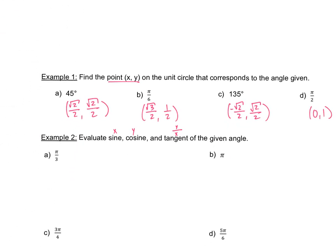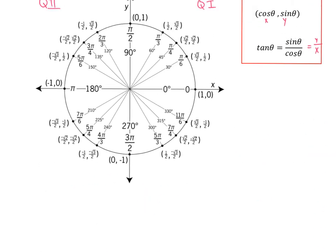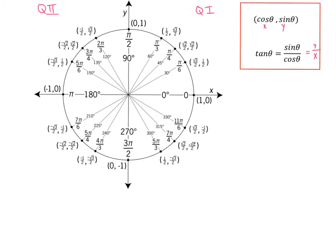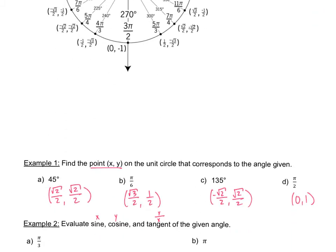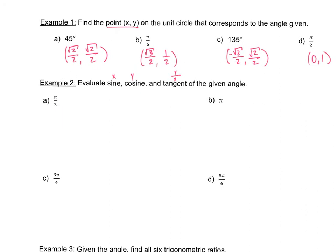Going back to the problem, we are looking for pi over 3. Going up to pi over 3 on the unit circle, I grab the coordinates: (1/2, square root of 3 over 2). So the coordinates are 1 half and square root of 3 over 2. Sine of pi over 3 is square root of 3 over 2 since sine is the y value. Cosine of pi over 3 is 1 half.